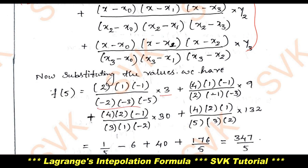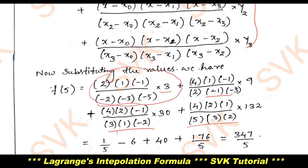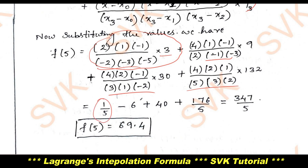Similarly, go with the second term, third term, and fourth term. Simplify each term individually. I get the first simplified value as 1/5, the next value as −6, then 40, and the last value as 176/5. Simplifying all of that, I got the answer as 69.4.